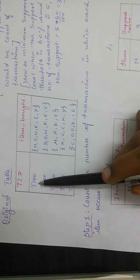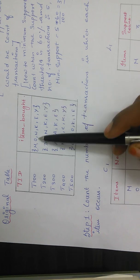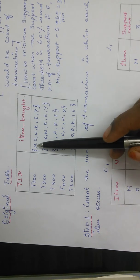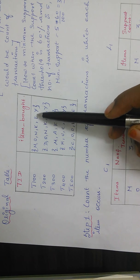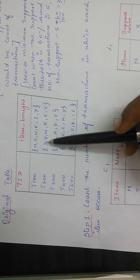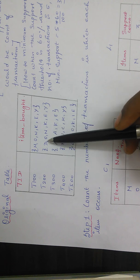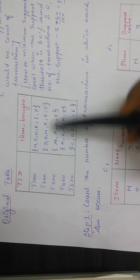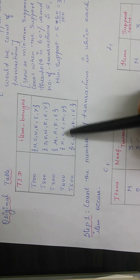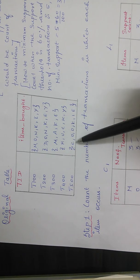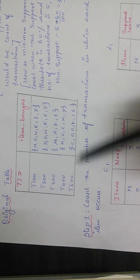For T100, you have 6 items bought: M, O, N, K, E, and Y. For T200, you have 6 items bought: D, O, N, K, E, Y. For T300 it is M, A, K, E. For T400 it is M, U, C, K, Y. And for T500 it is C, O, O, K, I, E. So these are all the items bought in these transactions.